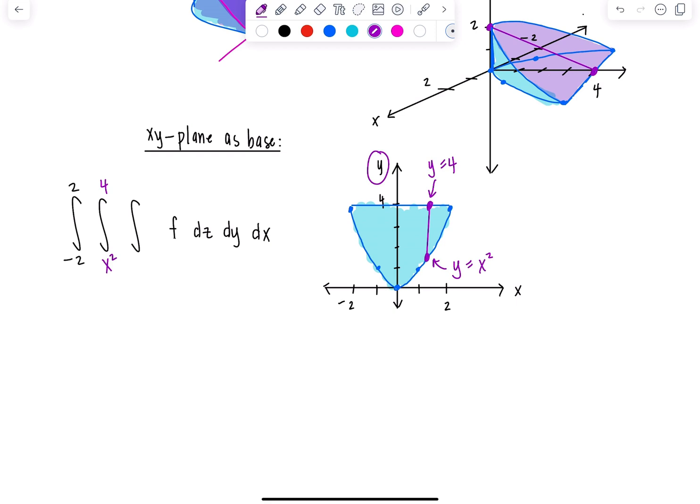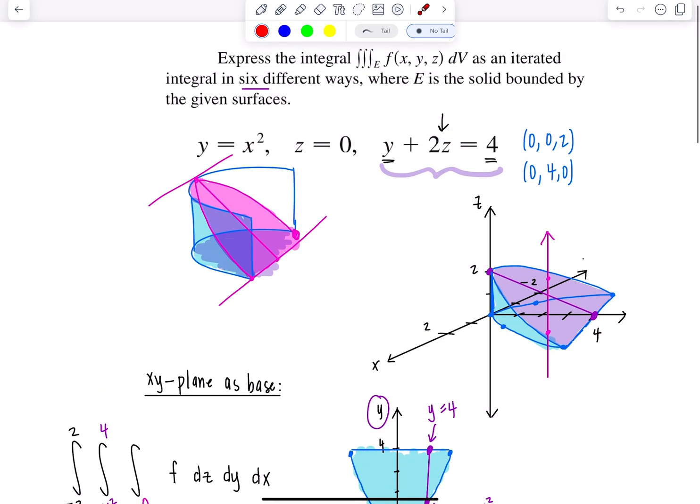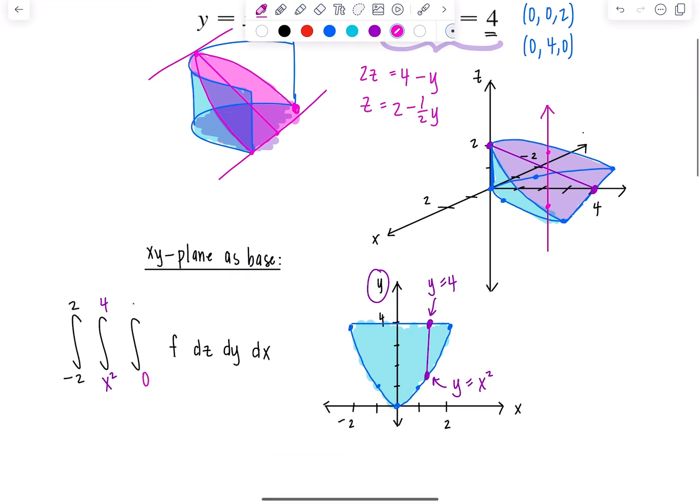Now we need limits for Y. Draw a line segment that increases in the direction of the variable whose limits you're trying to find. Where it hits first is the lower limit, where it hits second is the upper limit. It hits first at the parabola Y equals X squared and second at the line Y equals four. For Z, go back to the original graph. It hits first through the XY plane which is Z equals zero, and second at the plane Y plus 2Z equals four. Solving for Z: two times Z equals four minus Y, so Z equals two minus one half Y. That's the upper limit for Z.